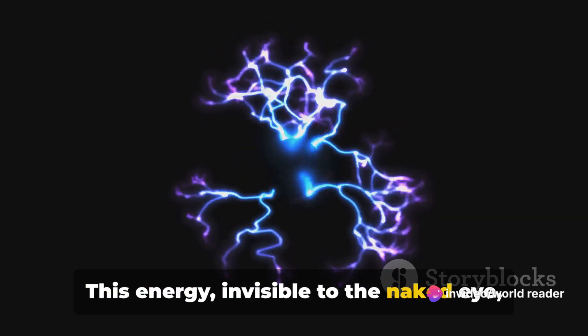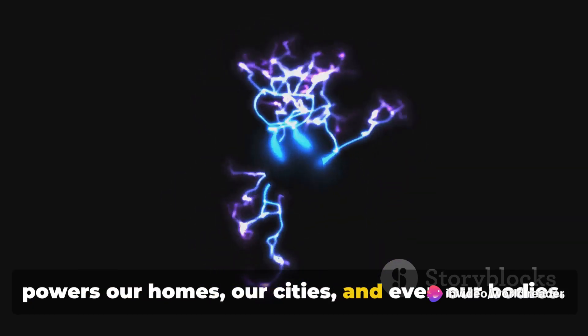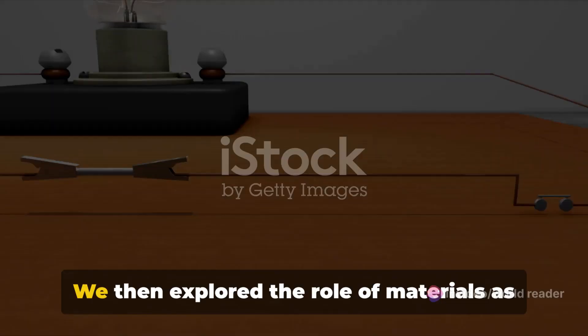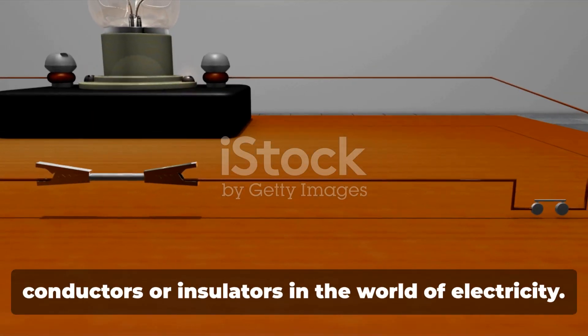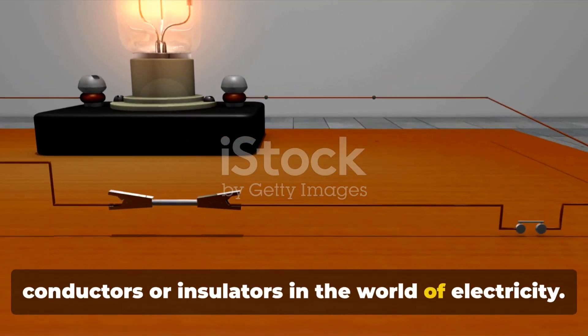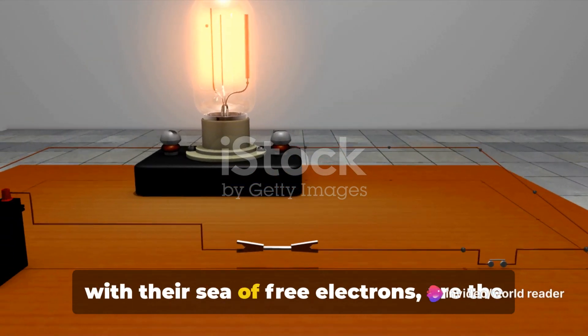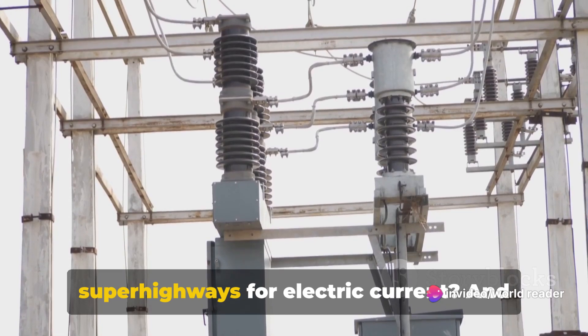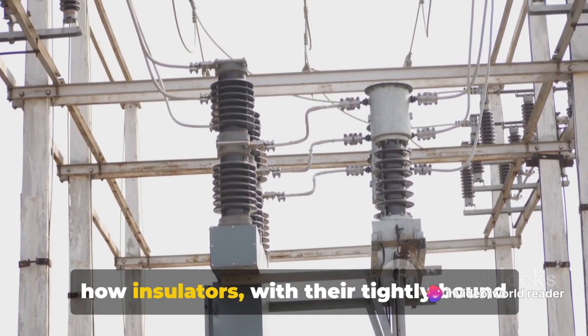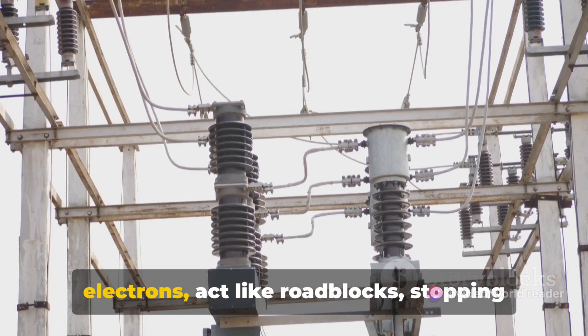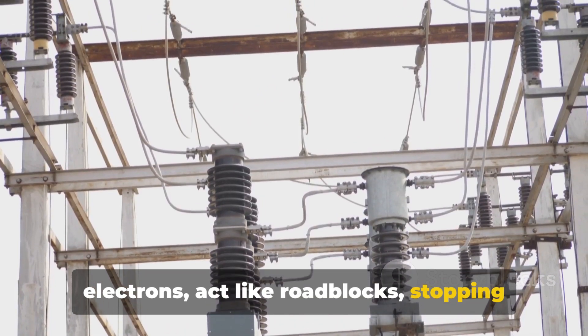This energy, invisible to the naked eye, powers our homes, our cities, and even our bodies. We then explored the role of materials as conductors or insulators in the world of electricity. Remember how we learned that conductors with their sea of free electrons are the superhighways for electric current, and how insulators with their tightly bound electrons act like roadblocks, stopping the flow of current.